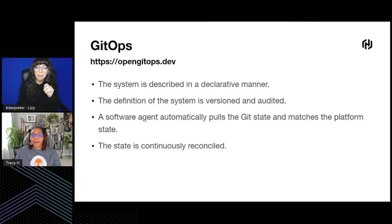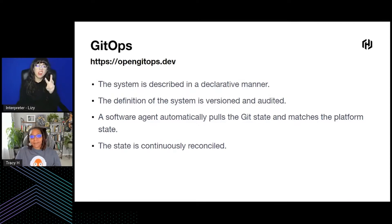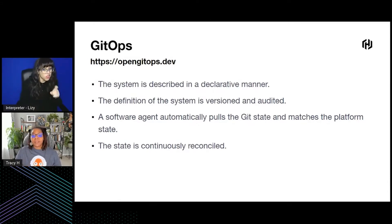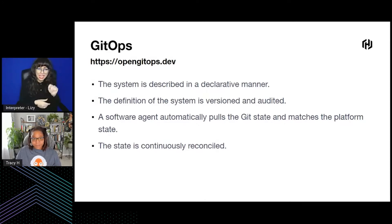The definition of the system is versioned and audited — in practice, this is typically stored in Git. A software agent automatically pulls the Git state and matches the platform state — in practice, for our purposes today, this is Argo CD, but you also have Flux, which would do pretty much the same thing. And the state is continuously reconciled, meaning any changes happening in Git should also be reflected in the system, as well as the opposite scenario.